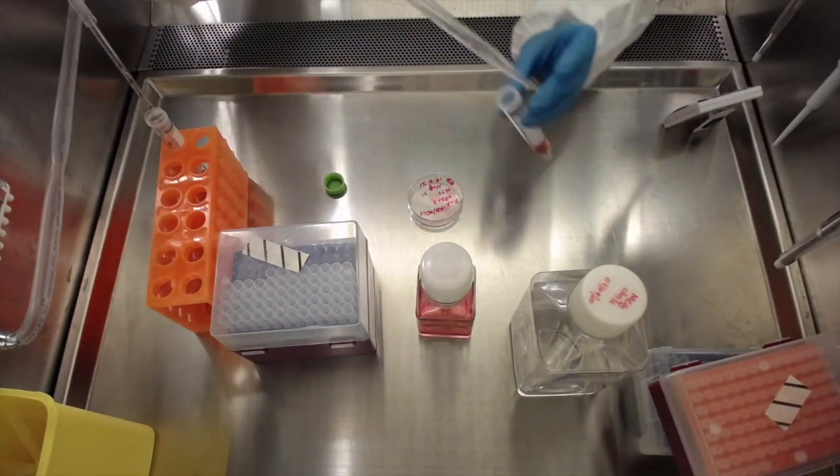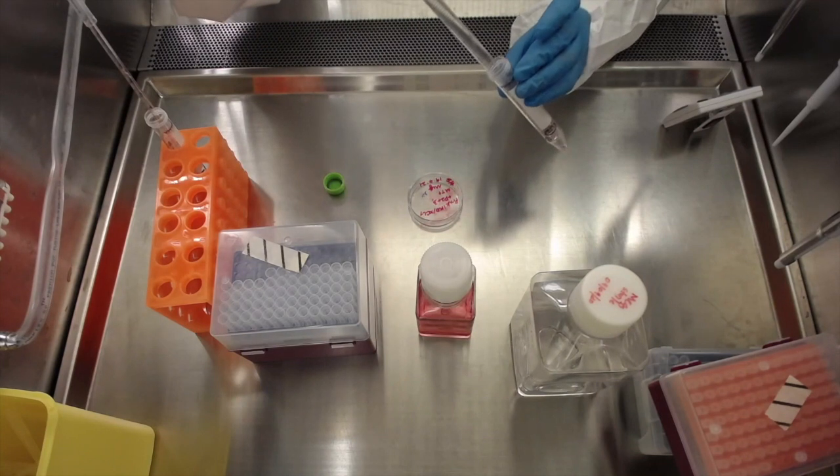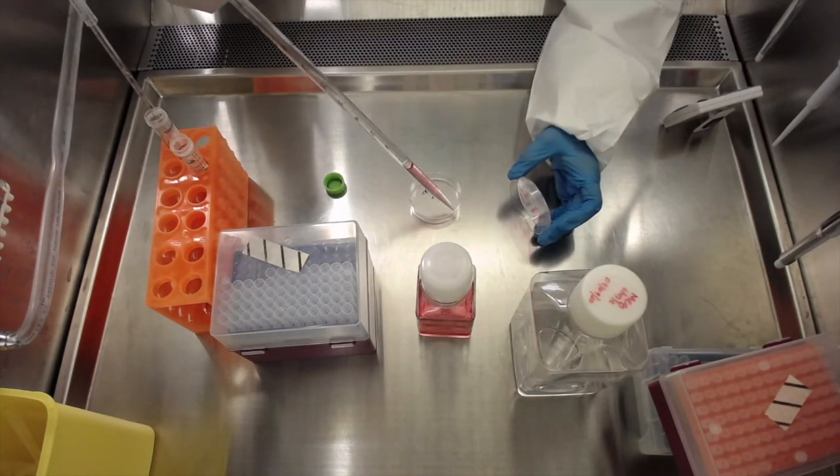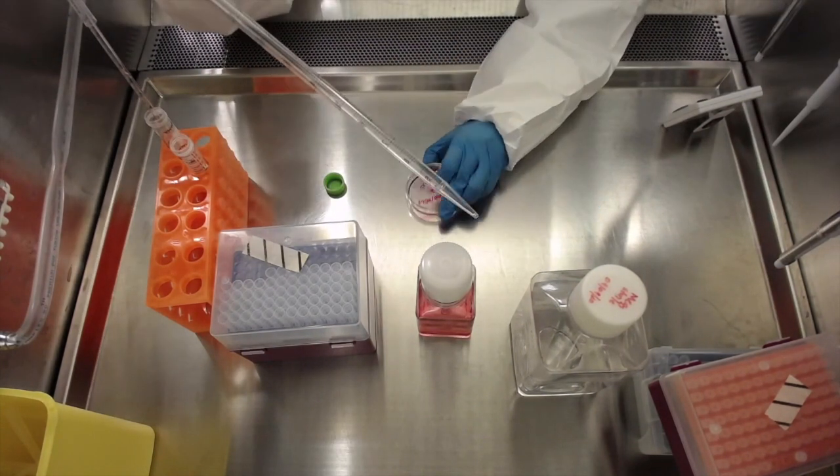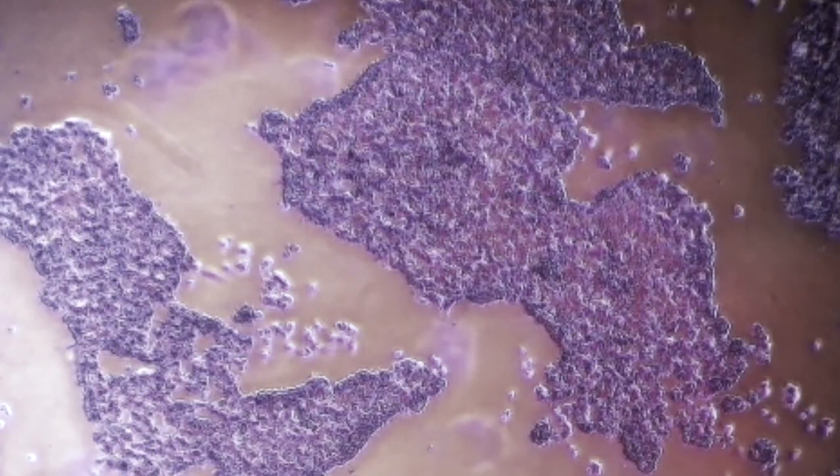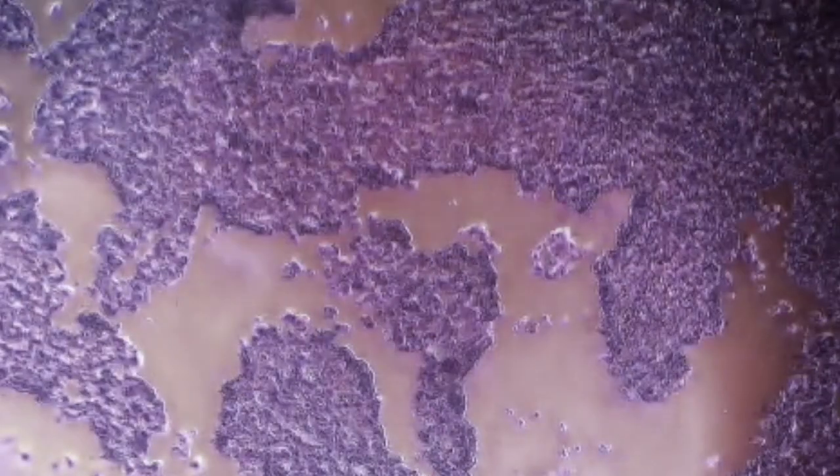Once incubation time is complete, add 3 milliliters of IPSC media and check the cells under the microscope. We can now see a few clumps of cells floating. These are IPSC colonies.